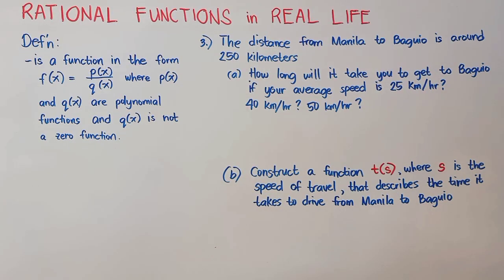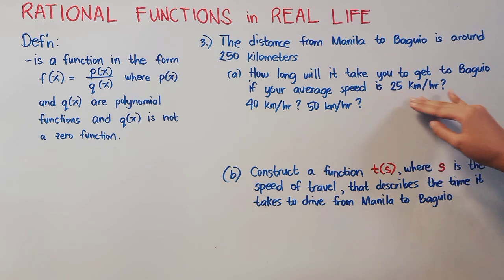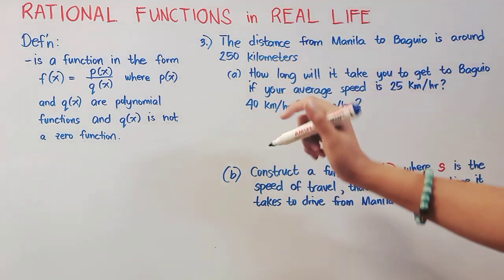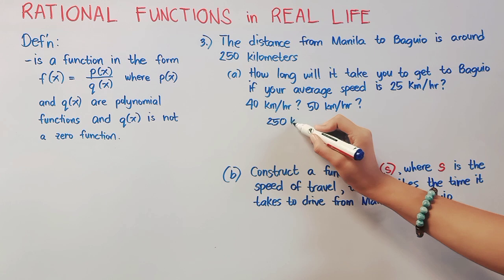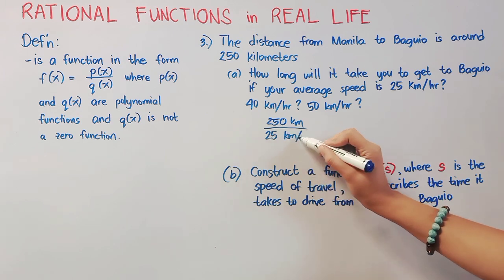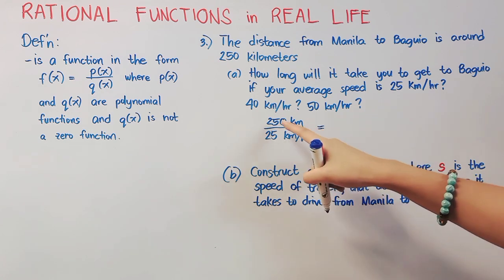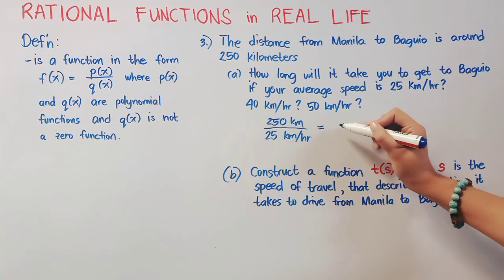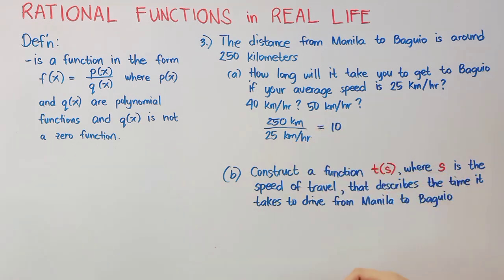We are now on number 3. The distance from Manila to Baguio is around 250 kilometers. Letter A. How long will it take you to get to Baguio if your average speed is 25 kilometers per hour, 40 kilometers per hour, 50 kilometers per hour? Let us start with 25 kilometers per hour. If the distance from Manila to Baguio is fixed at 250 kilometers, and you are running a speed of 25 kilometers per hour, that means to say, we will simply divide here 250 to 25. That will give us 10. Now, the same unit here will be canceled, so what's left is hours. So, it will take us 10 hours to get to Baguio if our average speed is 25 kilometers per hour.